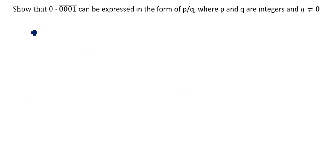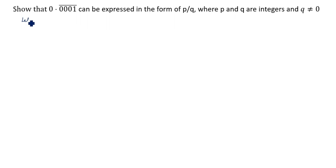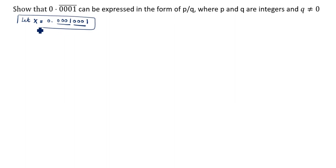Next: show that 0.0001̄ (bar on all 4 digits: 0001) can be expressed in the form of p by q, where p and q are integers and q is not equal to 0. So we let x equal to 0.00010001... — the bar covers 4 digits. This is the first equation.